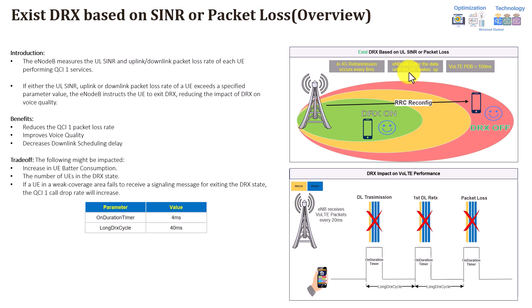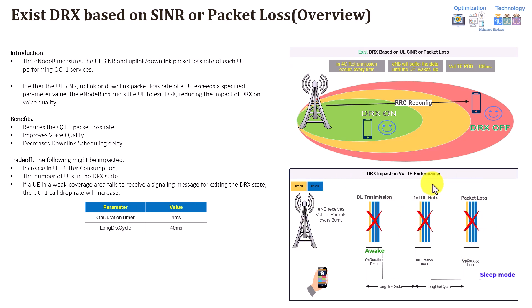The third point is that the eNodeB buffers data when the user is already in DRX mode, and cannot send data until the user exits DRX. DRX means discontinuous reception — the user is in sleeping mode and cannot receive data. For this example, we assume the onDurationTimer parameter is 4 ms and the long DRX cycle is 40 ms. These are the typical recommended settings found in most VoLTE networks.